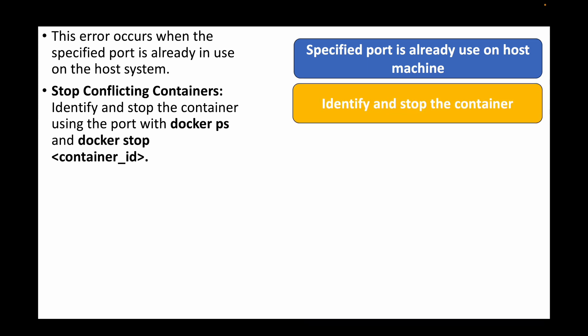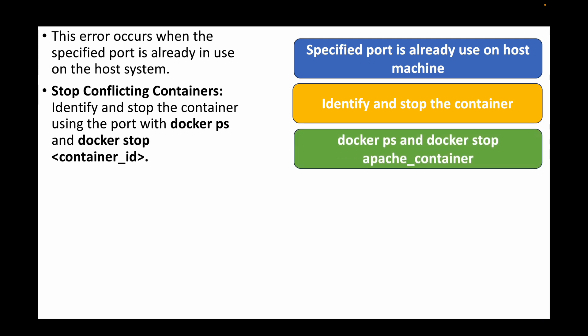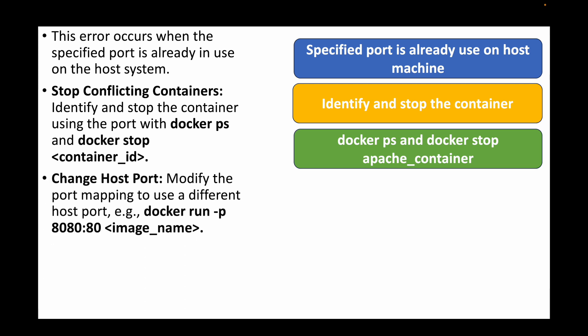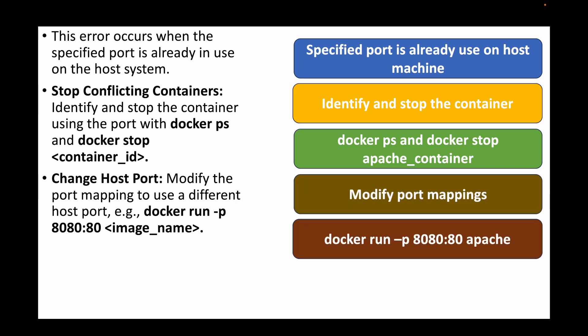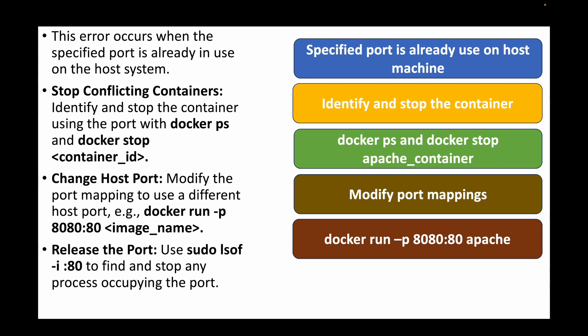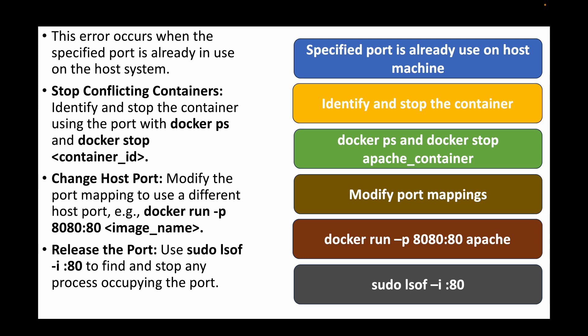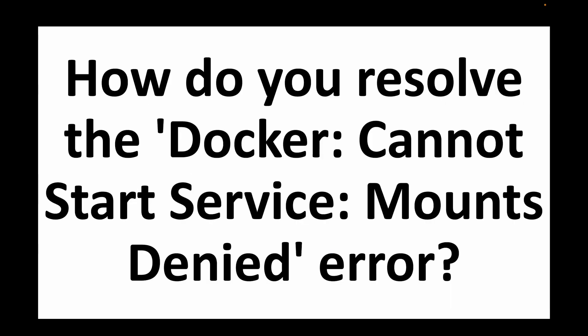If you want to use the same port number, stop the conflicting container: use `docker ps` to identify it, then run `docker stop <container_name>`. Alternatively, modify the port mapping to use a different port with `docker run -p 8080:80 <image_name>`. You can also release the port by using `sudo lsof -i :80` to find and stop any process using that port.